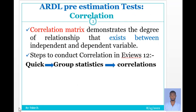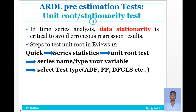The first pre-estimation test is the correlation matrix. A correlation matrix demonstrates the degree of relationship that exists between the independent and dependent variables. The steps in EViews to conduct this correlation are: click on Quick, then Group Statistics, then Correlation. You will get the result of the correlation matrix when you follow these steps.